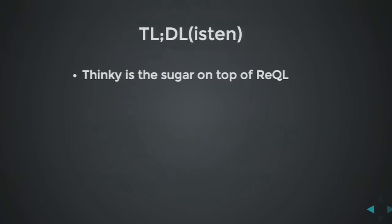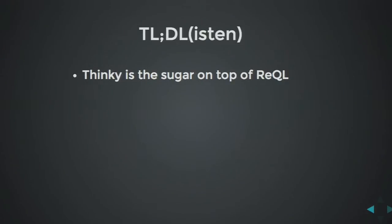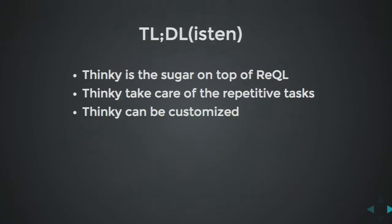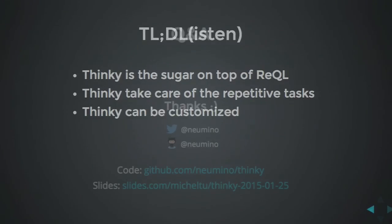To summarize: Thinky is just sugar — it's really light and doesn't do much on its own. It handles things related to relations, but the API is the ReQL API, so it just reuses that. Thinky takes care of all the boring stuff, making code easier, and it's customizable enough to fit many needs.